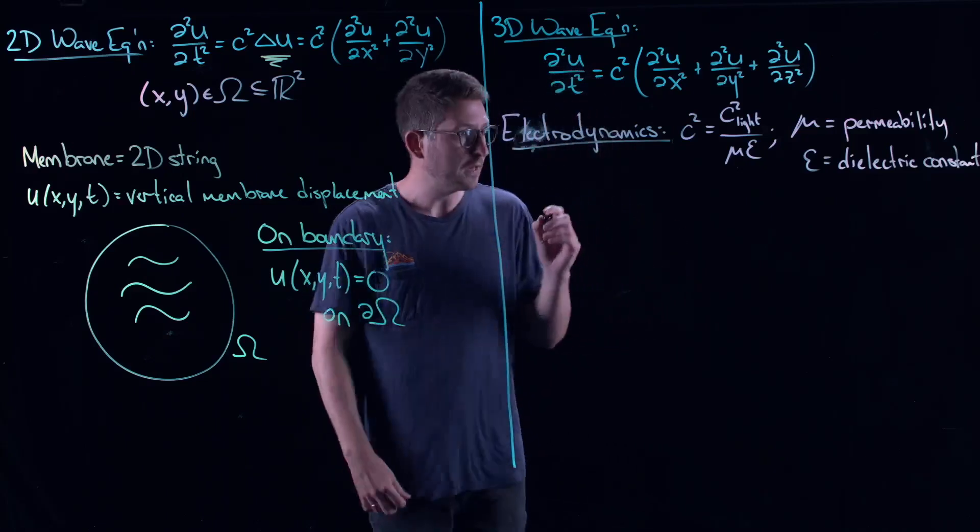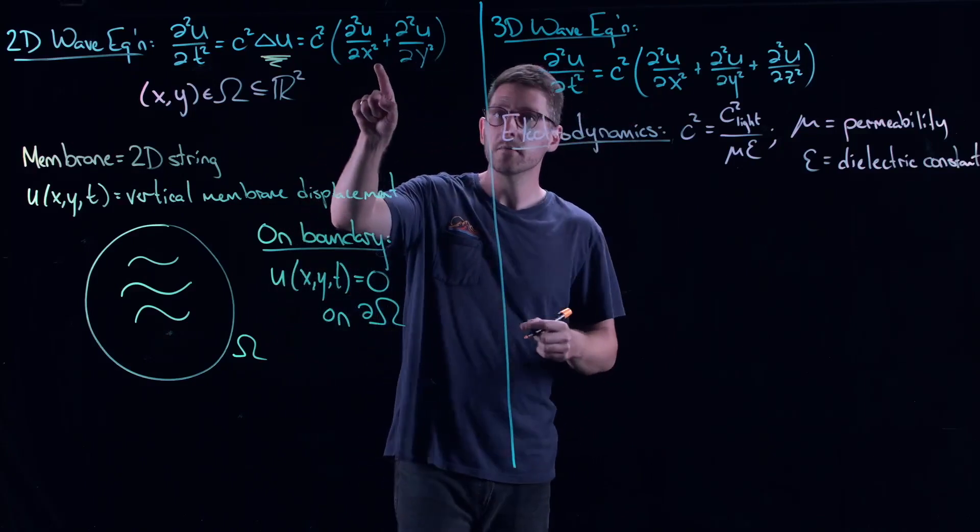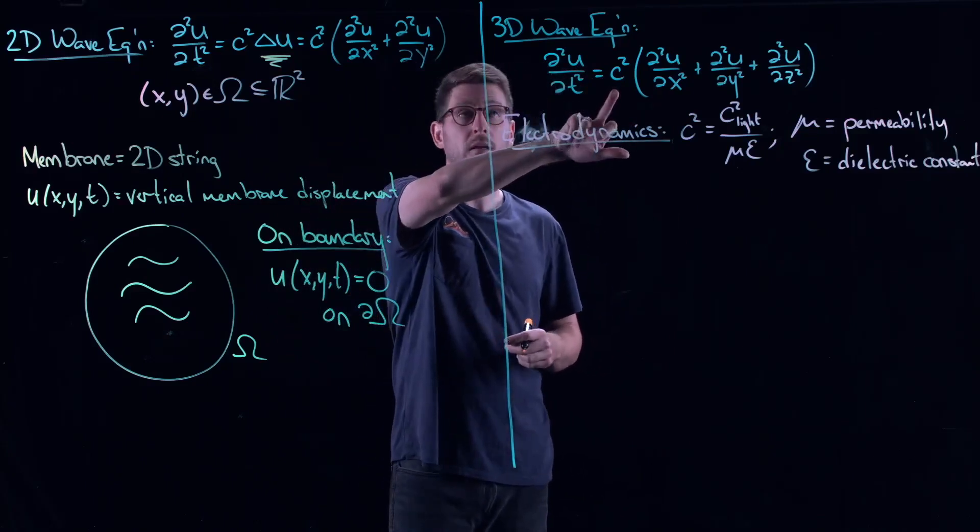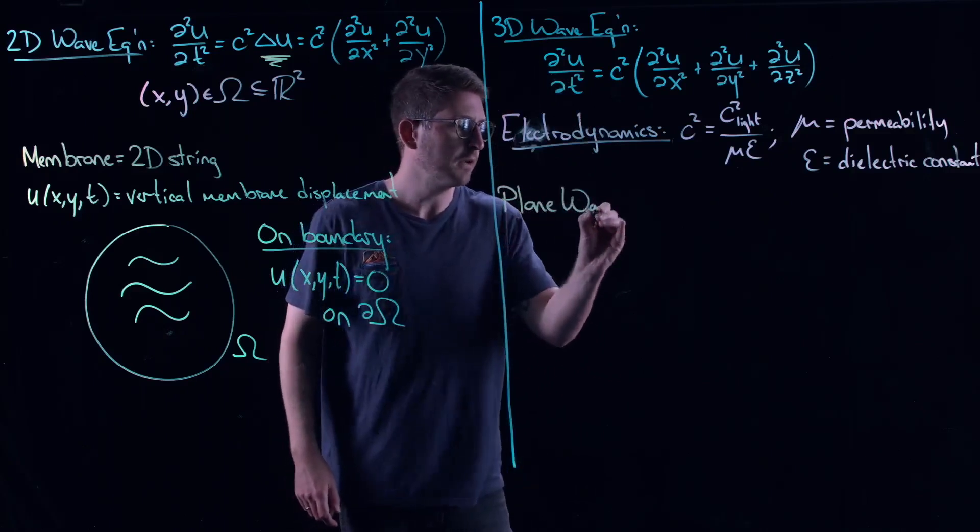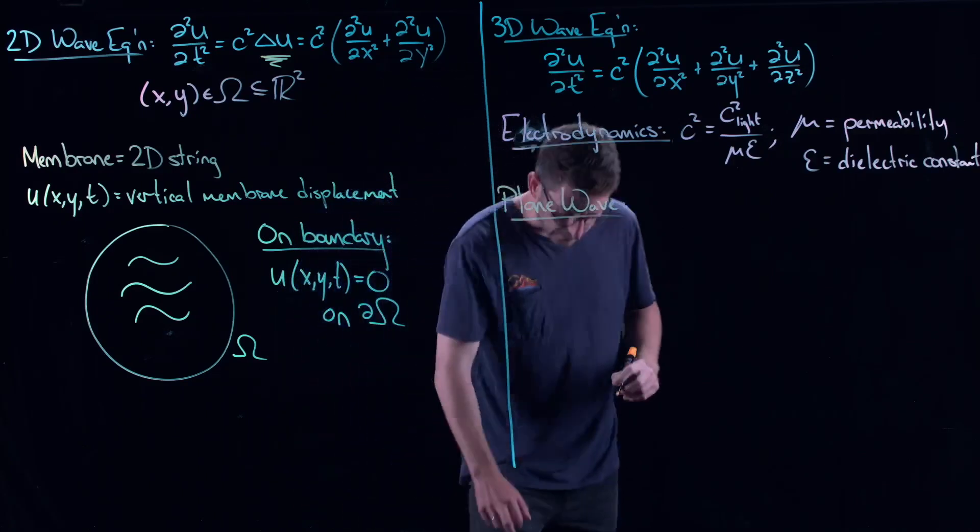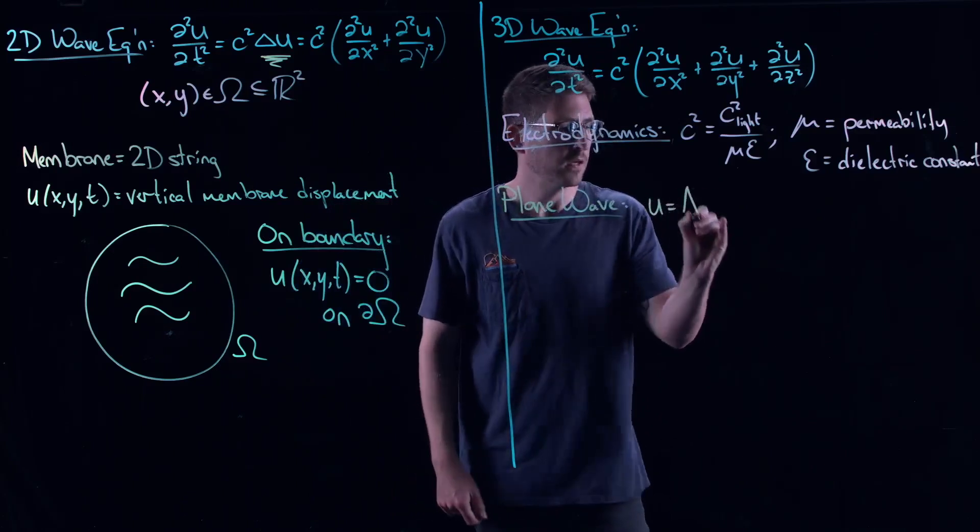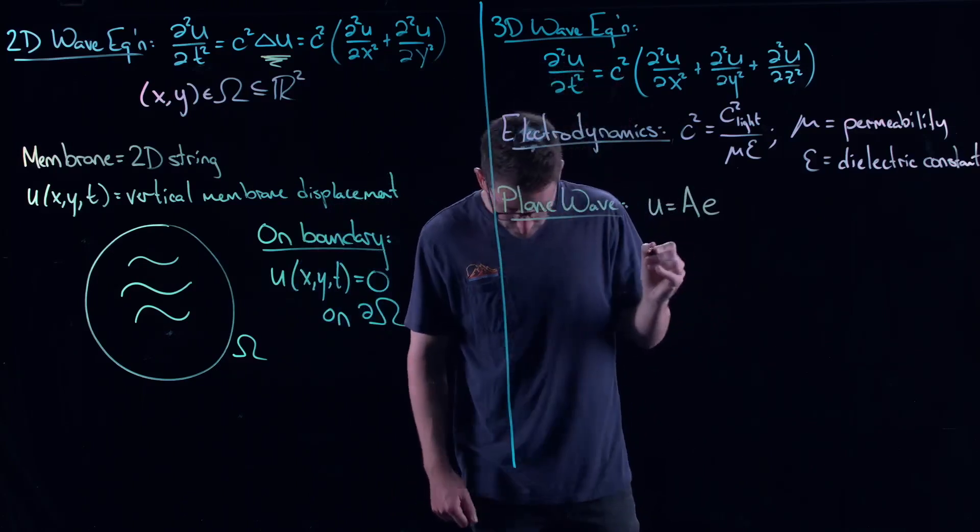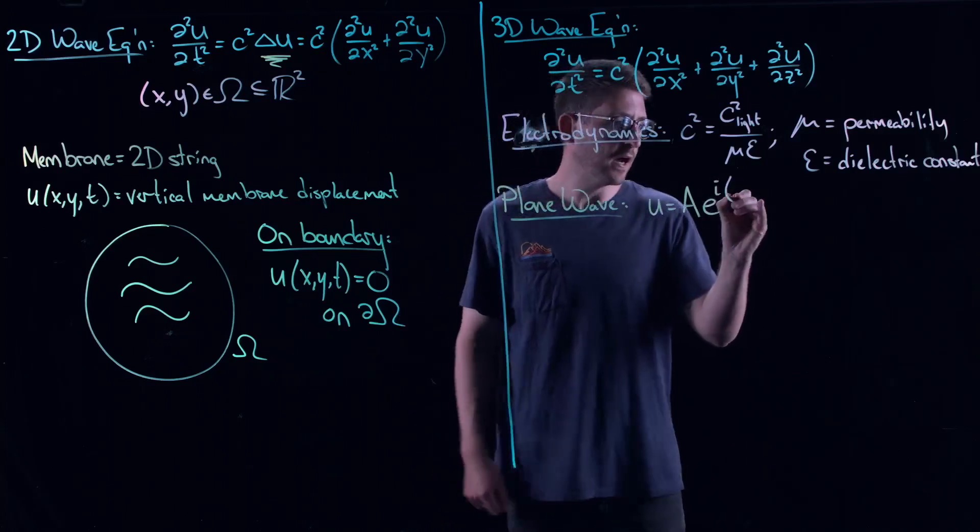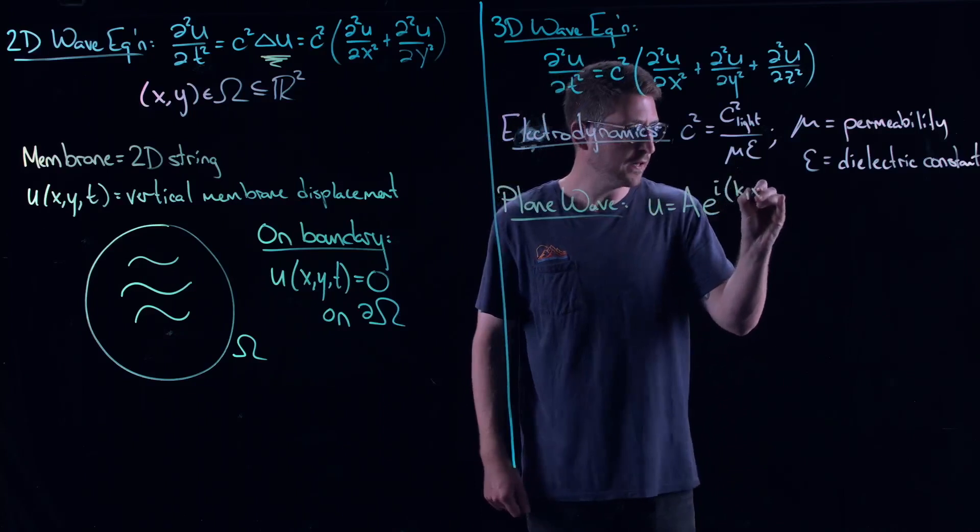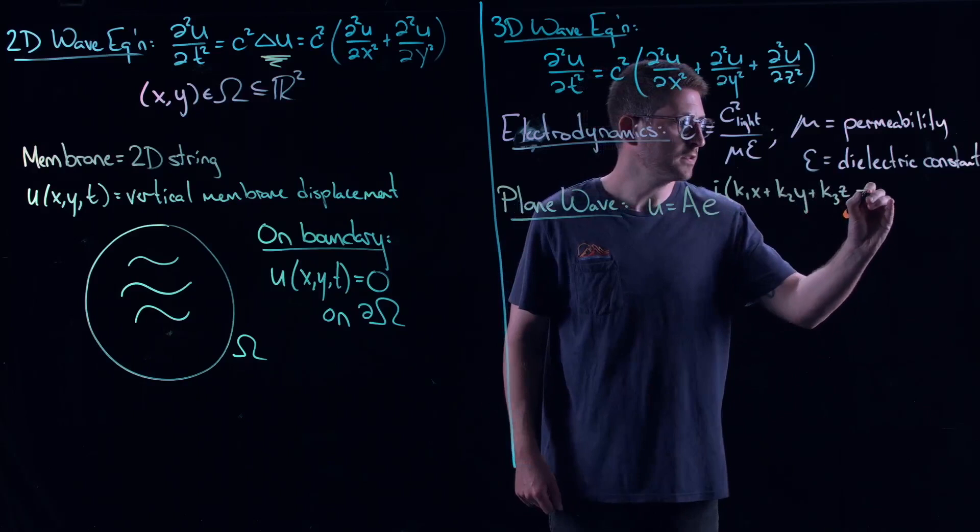But let's take a look at a particular type of solution to this three-dimensional equation. Now, the same thing, you could get these same equations in 2D. They just have more meaning in 3D. And that equation is what's called a plane wave. Now, plane waves are very important types of solutions. And they carry a very simple form.